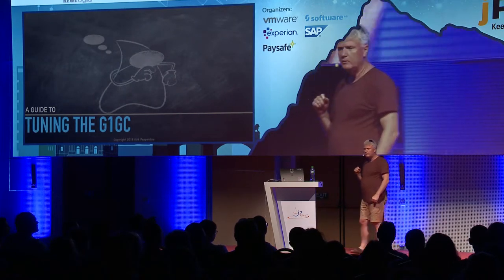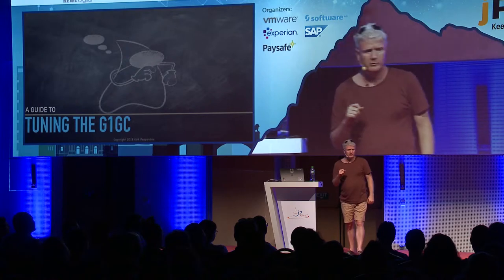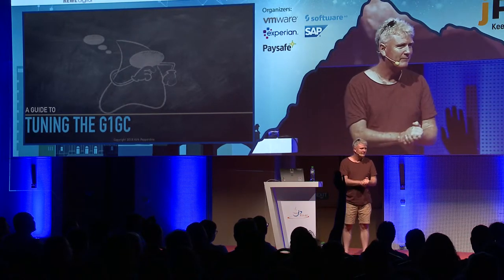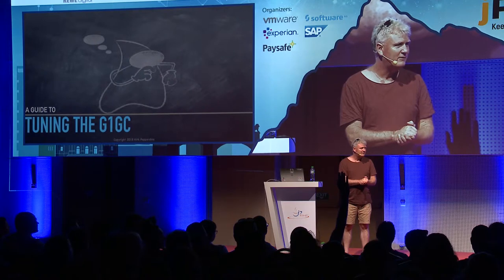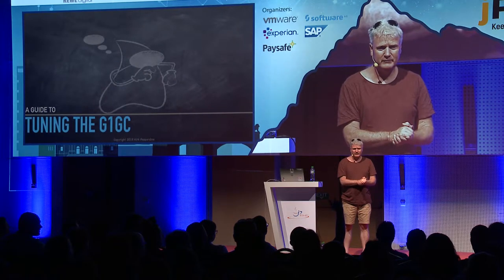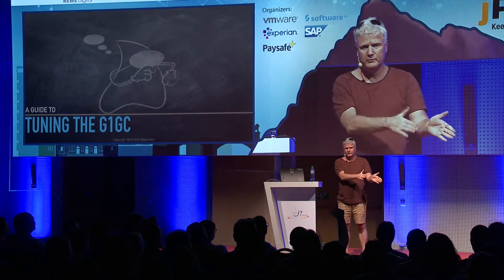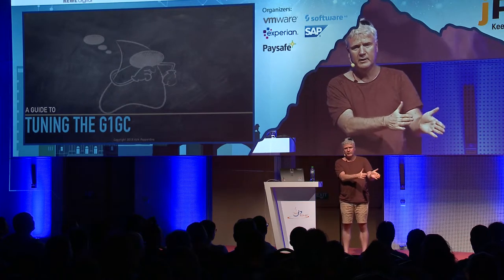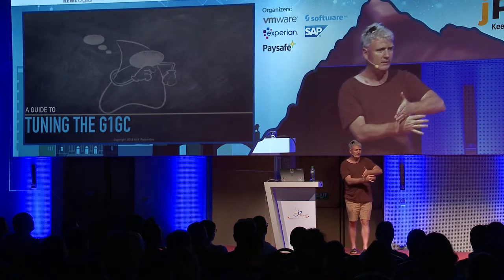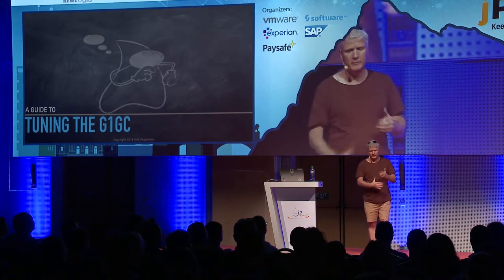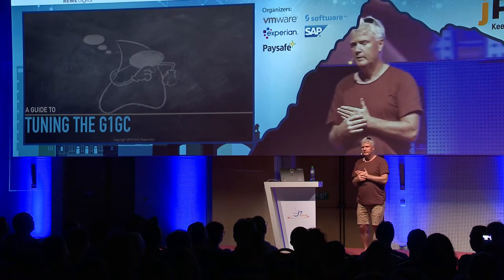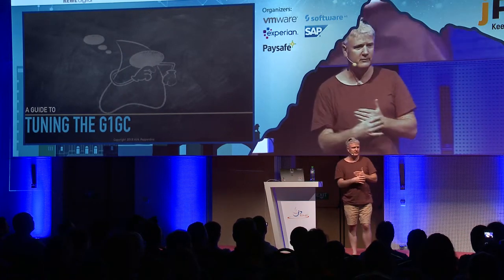Anybody have a date on when the first garbage collector was written? Just shout it out. Fifty? Fifty-eight, fifty-nine — that's when it was first conceived. It ends up in the Lisp engine released in 1960. So here's the overhead of a garbage collector in the 1960 Lisp engine: forty percent.